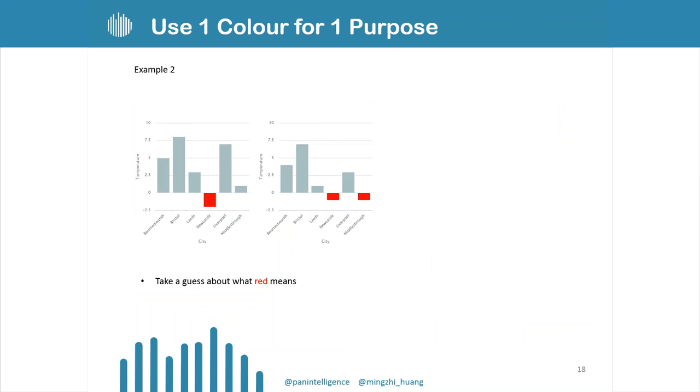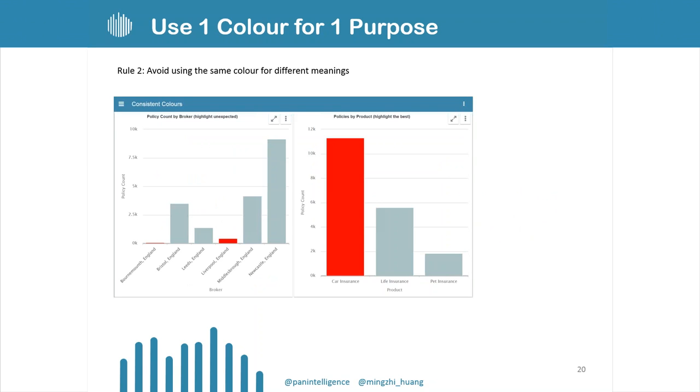Another example here is take a look at these two charts. You might start wondering, what does red mean? Your interpretation could be red means lower than zero. But if you see another chart like this in the same dashboard, you might start wondering, what does orange mean now? It still means something lower than zero, but it has two different colors, so it might confuse you a little bit. That's rule number one.